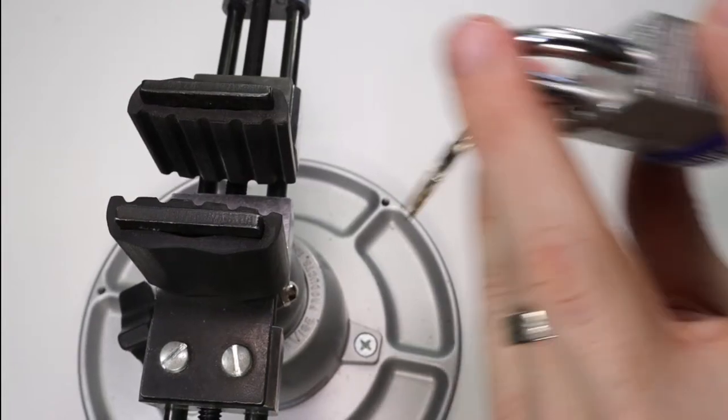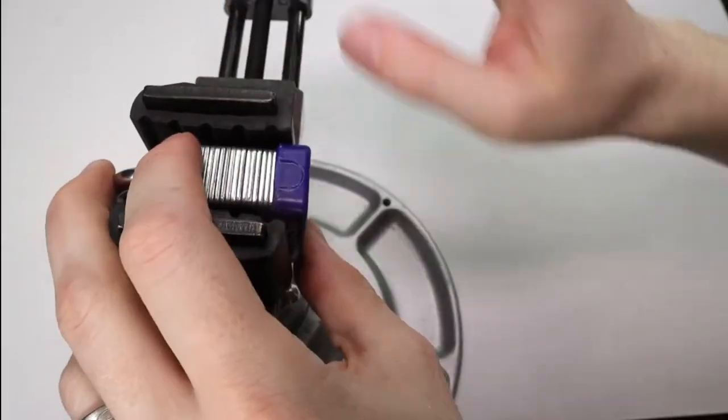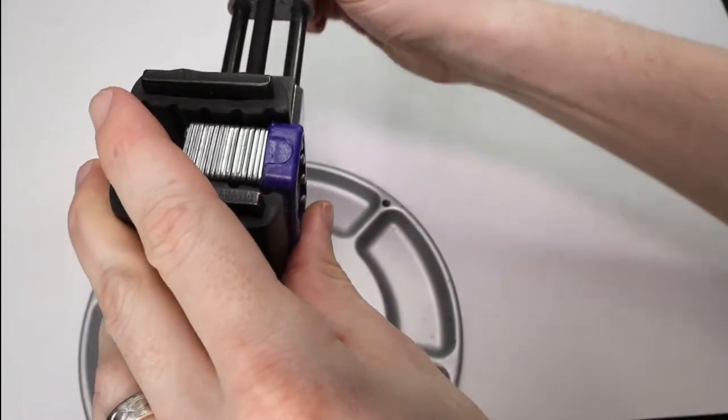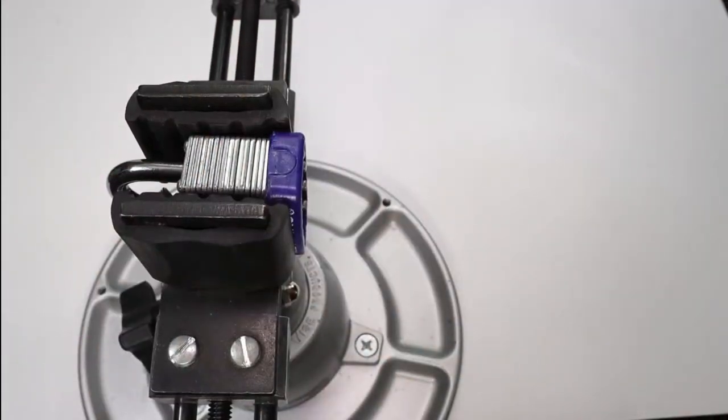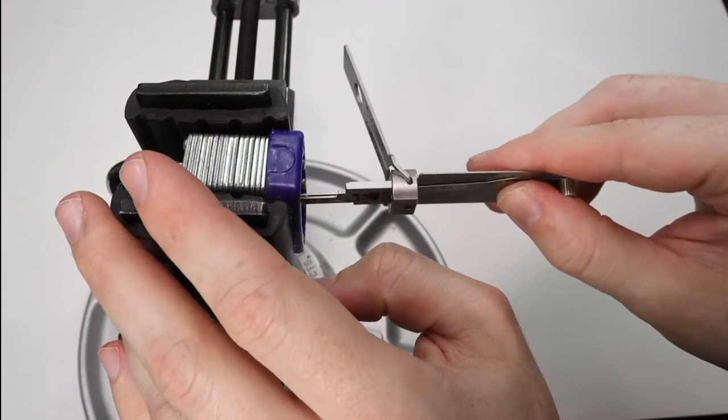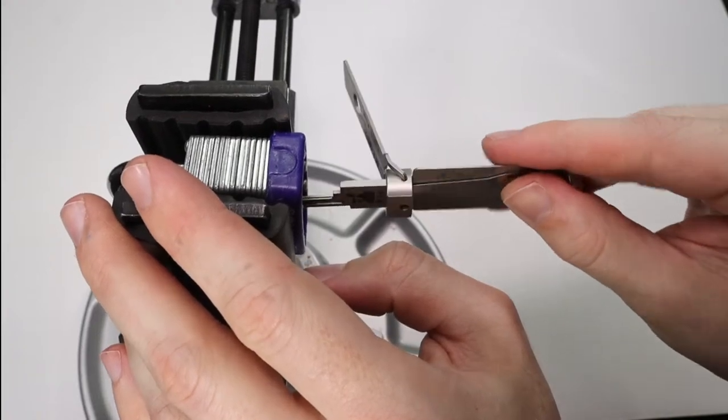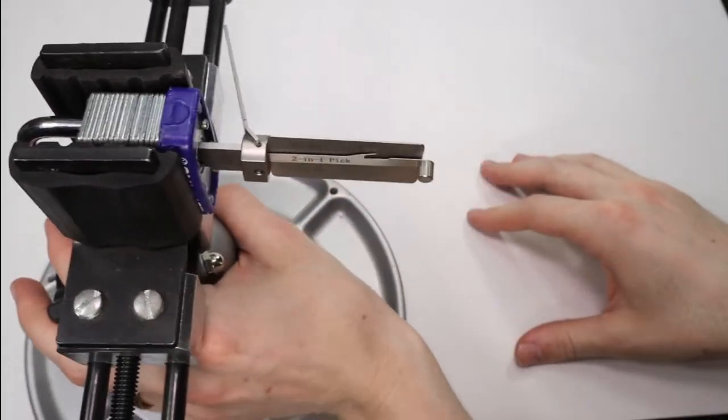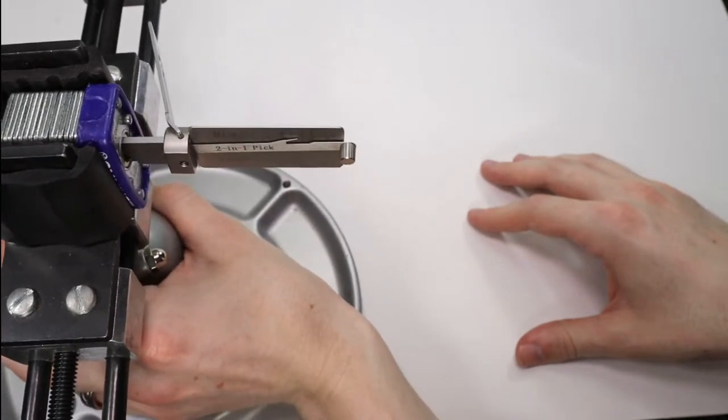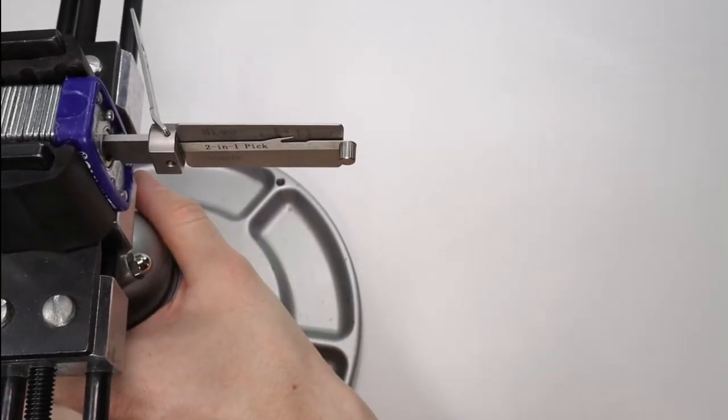So the last lock I want to feature is just going to be this Brinks lock which happens to have the M1 keyway which I did feature in my previous video. But this is just to show you an example of picking. I found this tool to be pretty responsive picking this lock. But I found the Master Lock model number threes were a bit more difficult for whatever reason.